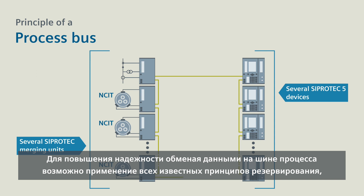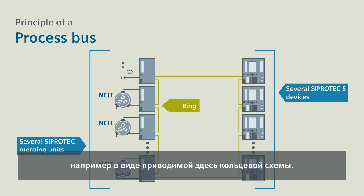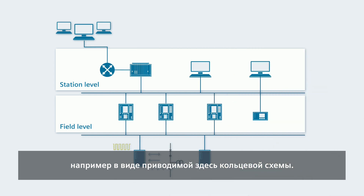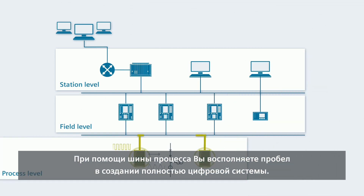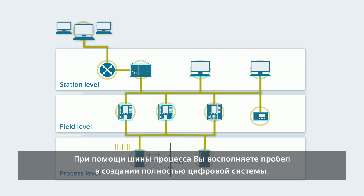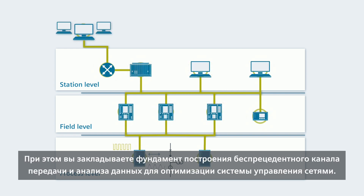For more transmission reliability, all known bus redundancy concepts can be applied with the process bus, such as operating as a ring shown here. With the process bus, you close the gap to a fully digitalized system. With that, you lay the foundation for unprecedented data links and data analyses for optimizing grid control.